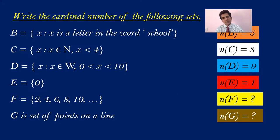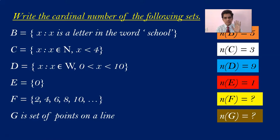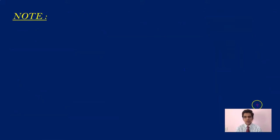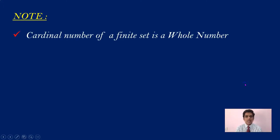You will learn about the cardinal number of infinite sets in your higher classes. This is an important note: the cardinal number of a finite set is a whole number. By counting the number of elements, you can tell there are 7 elements, or 2 elements, or 10 elements — you can represent that with a whole number.